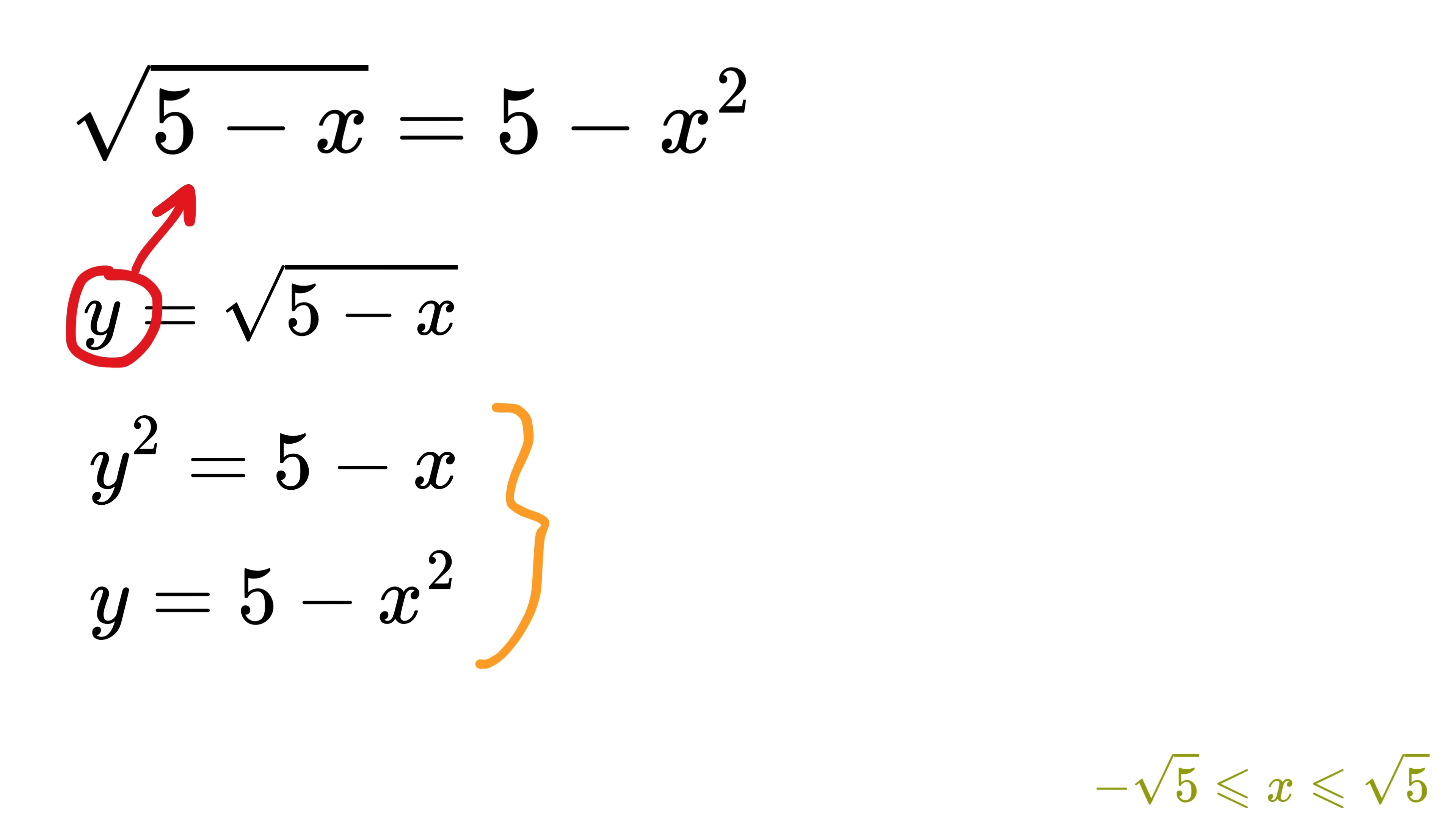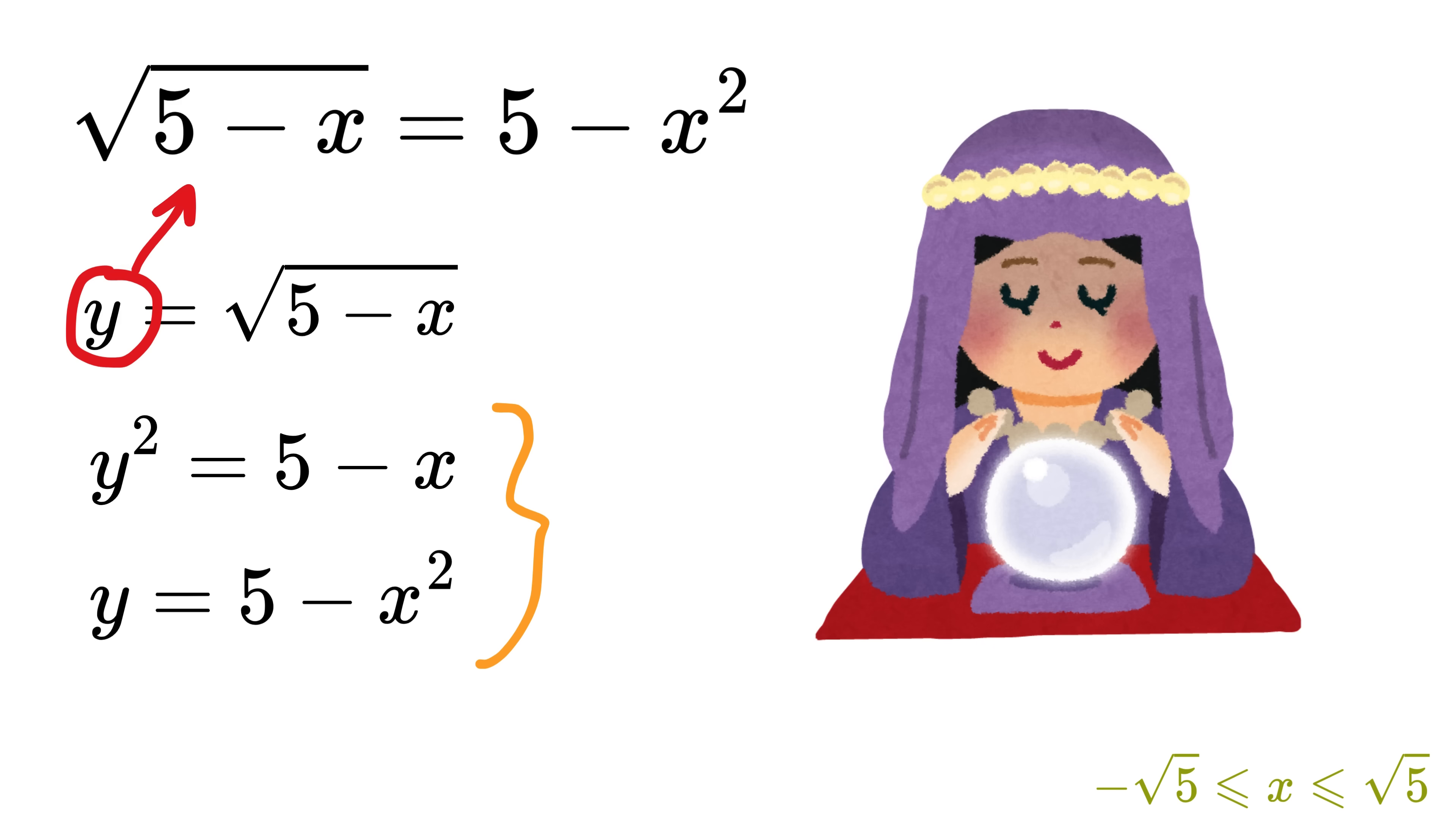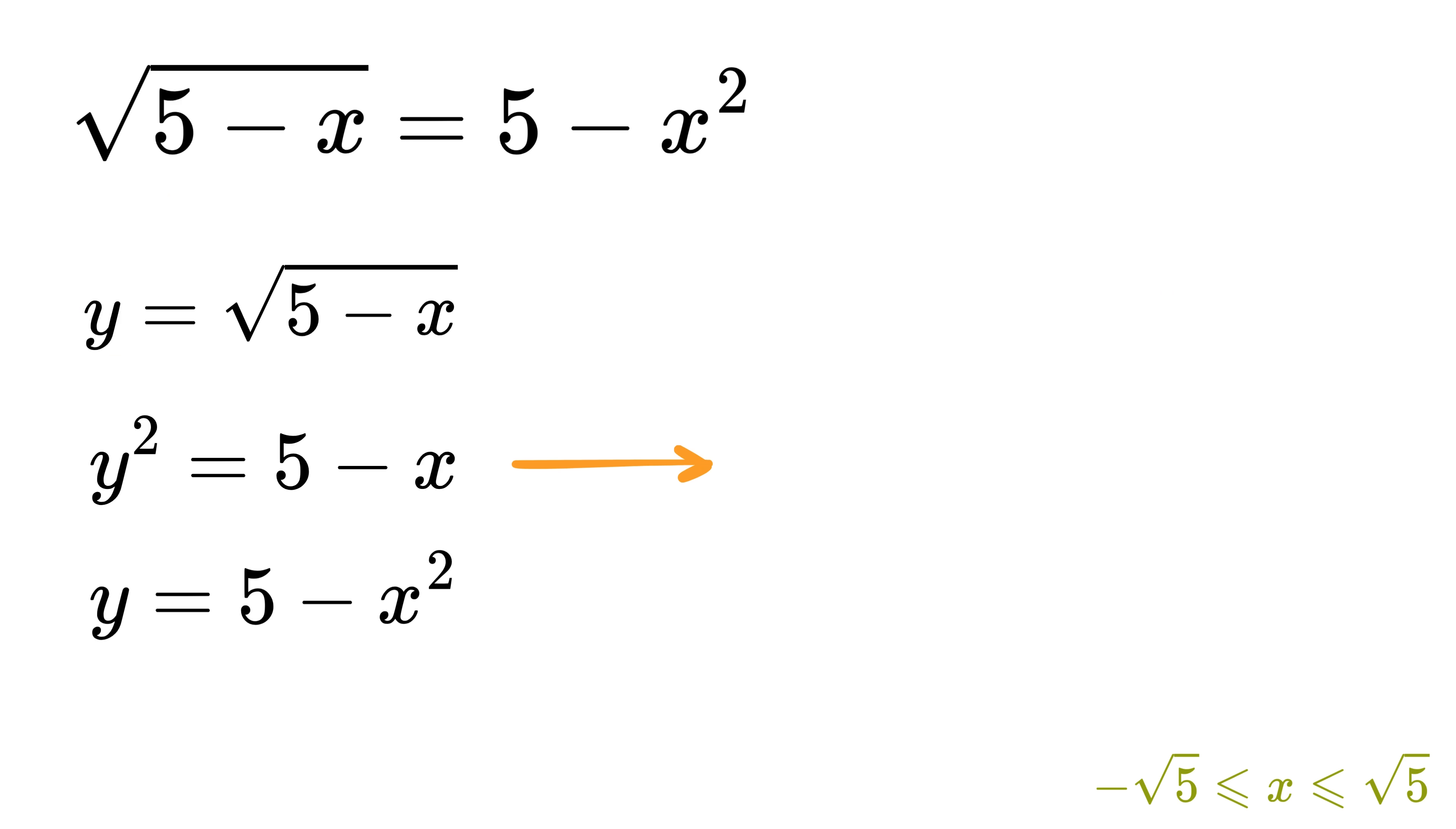Now, what to do? This seems more complicated, right? But wait, the real magic is coming. From this equation, we can express 5 as y squared plus x. And from this equation, we can express 5 as x squared plus y. Thus, we can equate both expressions for 5 to get y squared plus x equals x squared plus y.